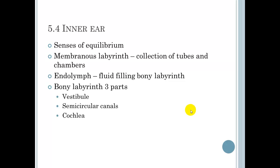5.4, the inner ear. This is just a general overview. We're going to see some pictures here in a second. Sense of equilibrium. This is a membranous labyrinth, a bunch of little nooks and crannies in this thing. Collection of tubes and chambers. Endolymph. Fluid-filled bony labyrinth. The bony labyrinth is in three parts, which is the vestibule, the semicircular canals, and the cochlea.